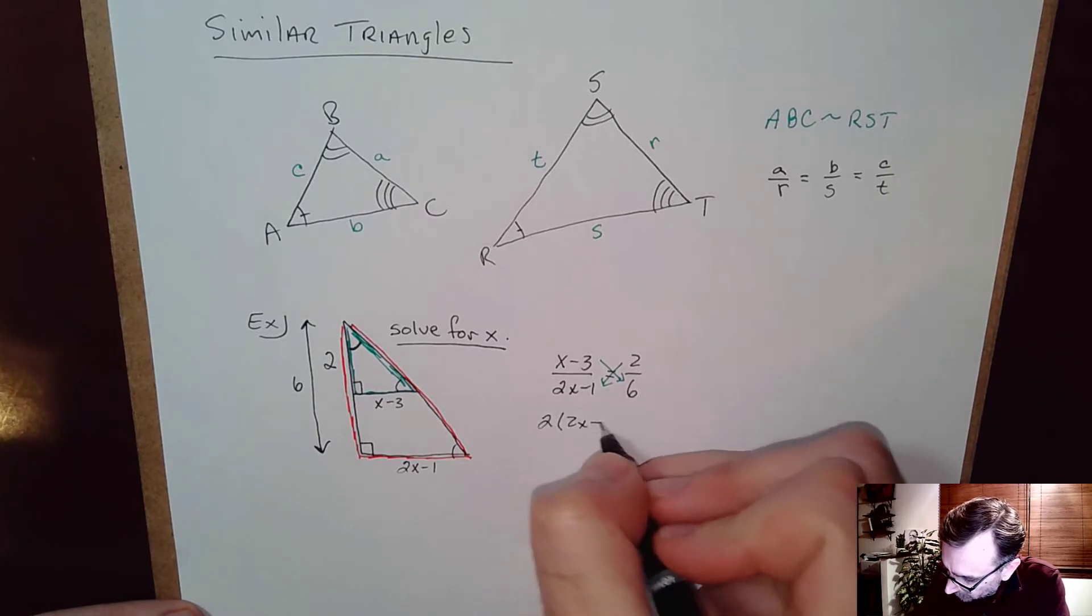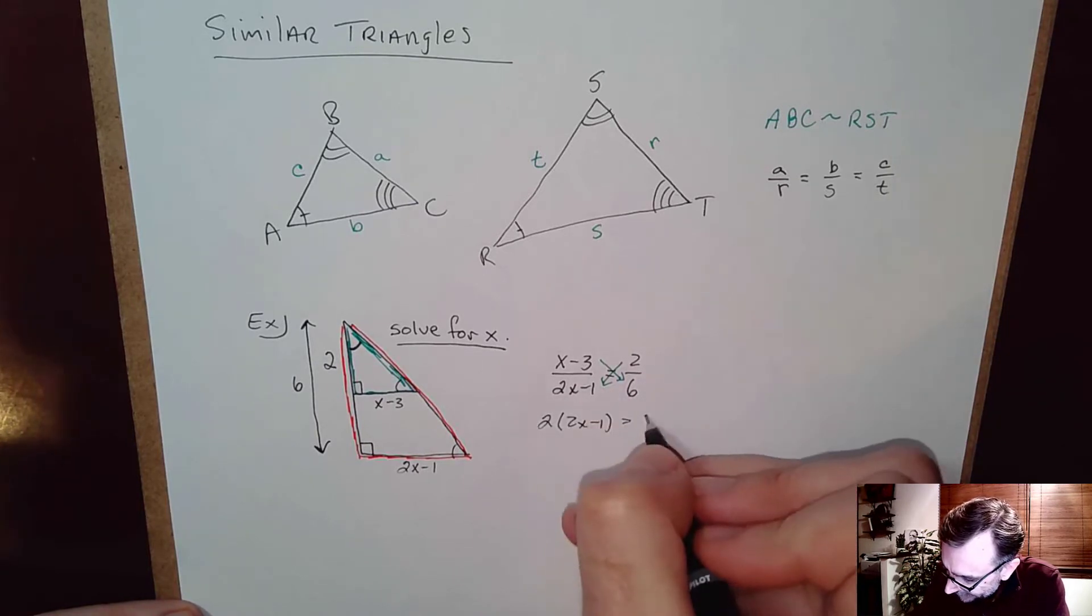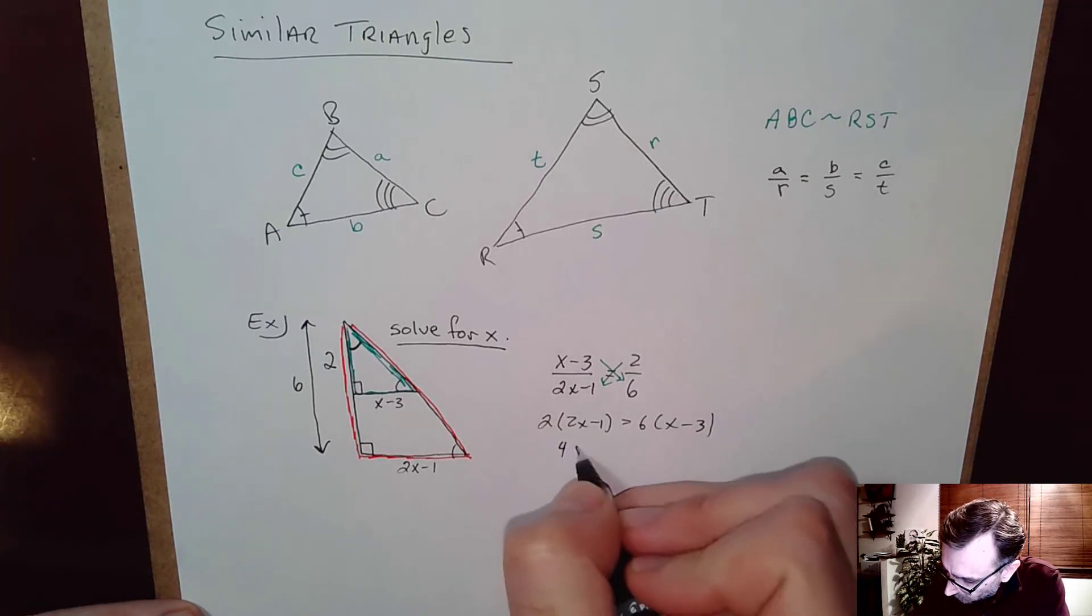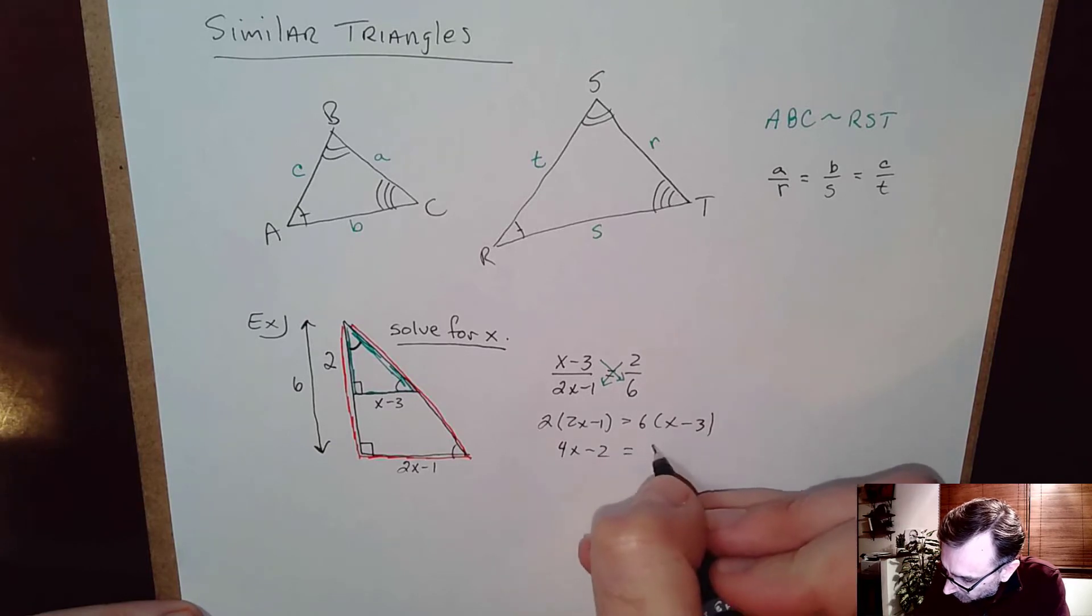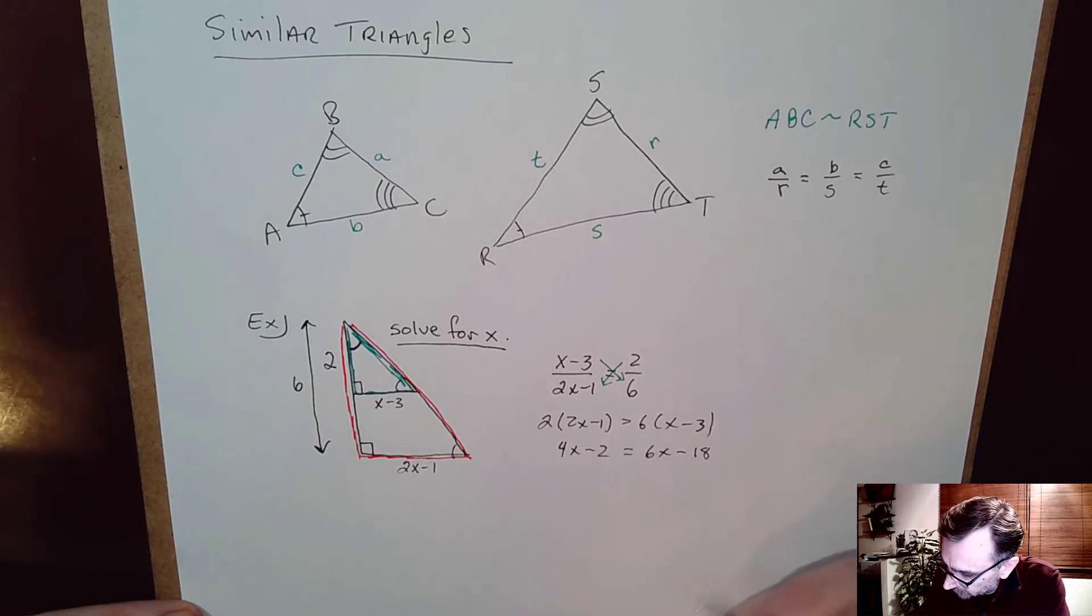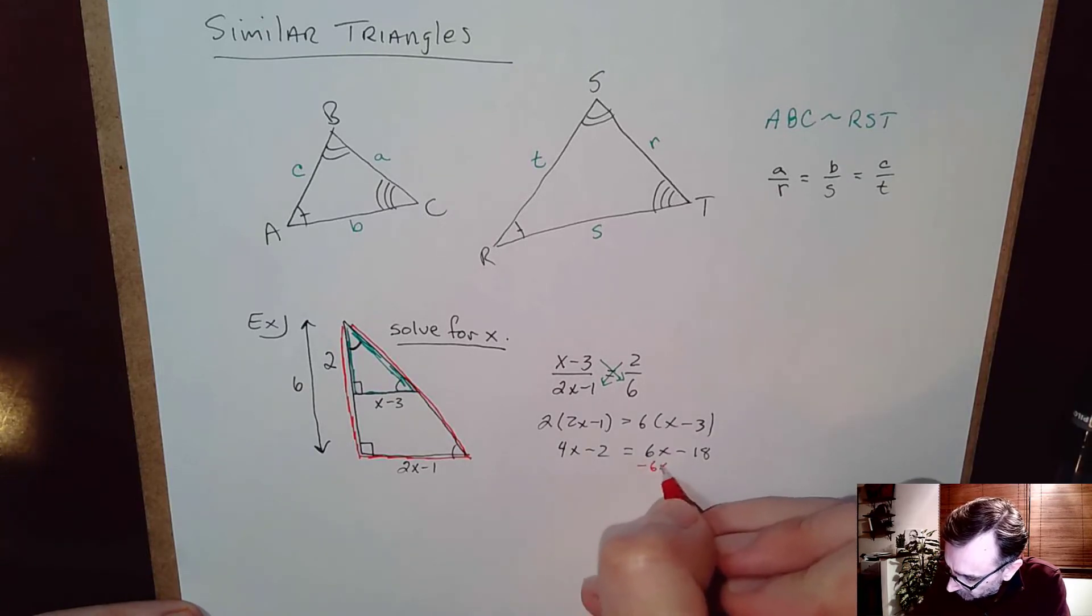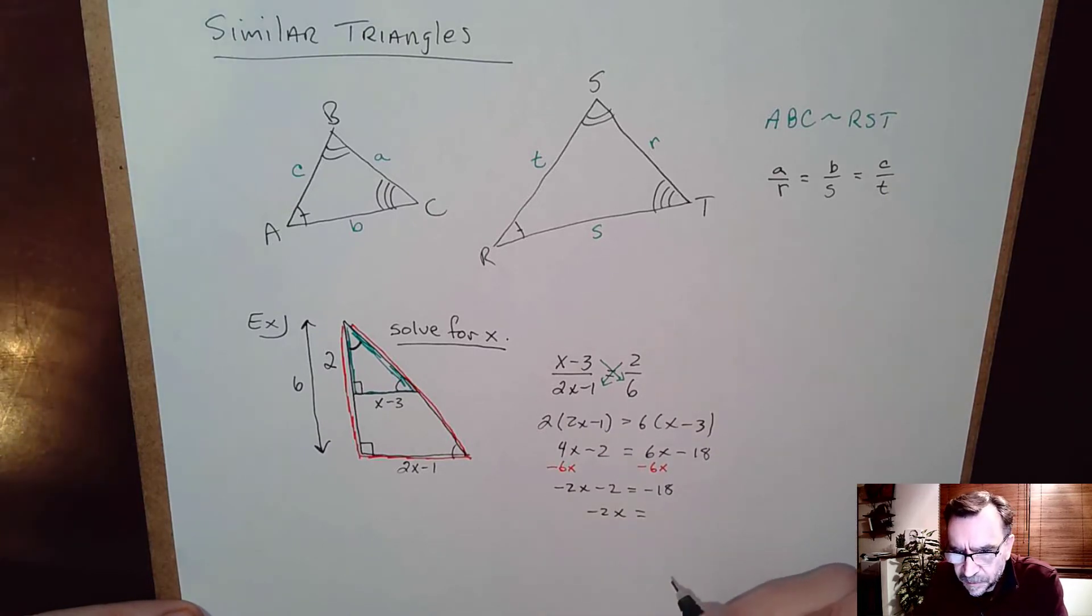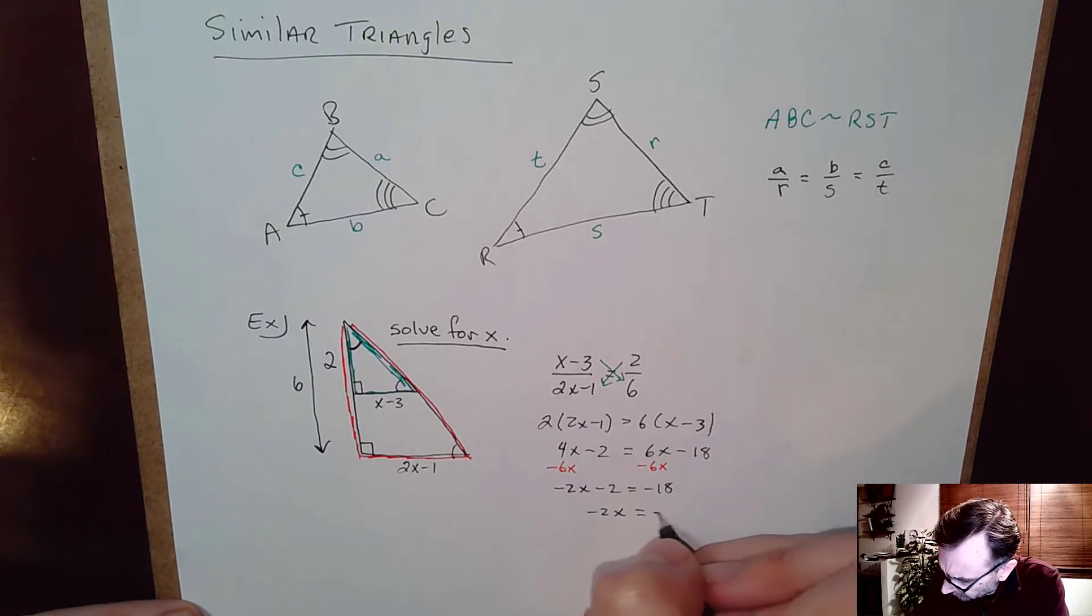So 2 times 2x minus 1 has to equal 6 times x minus 3 and cross multiply. And then 4x minus 2 distributing equals 6x minus 18. And then we'll go ahead and just get opposite side like terms. I'll subtract 6x on both sides. And so we have negative 2x minus 2 equals negative 18. Adding 2, negative 2x equals, is that going to be negative 16?